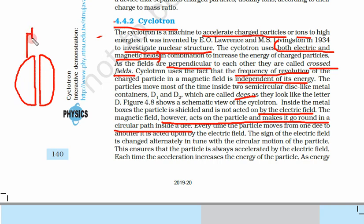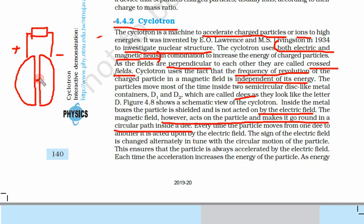Initially D1 is positive and D2 is negative. Since the particle is a proton, it is attracted towards the negative side and repelled from the positive side. So the particle moves towards D2.